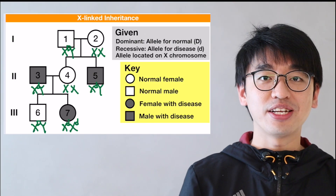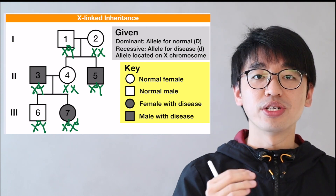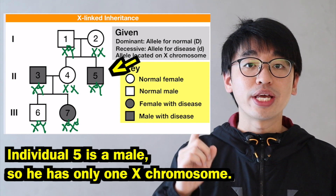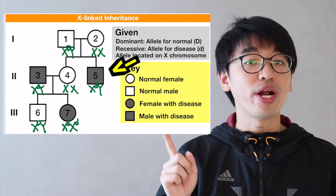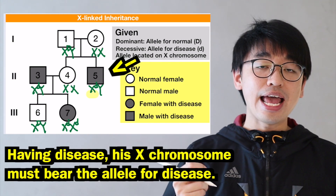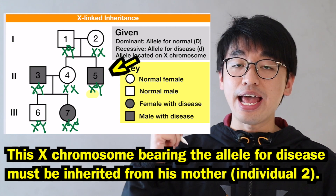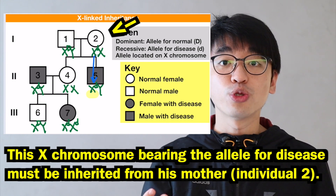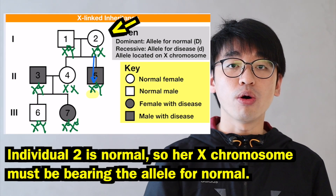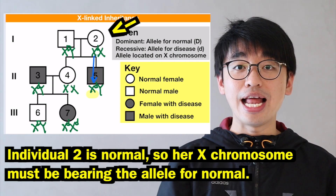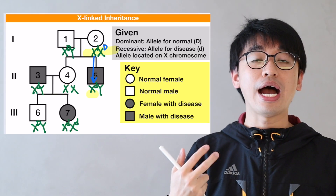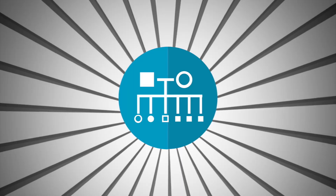To find the genotype of individual 2, we do not start with her directly — we start from her offspring. Using individual 5: he is male, so he has only one X chromosome; he has disease, so his X chromosome bears the allele for disease. This X chromosome must have been inherited from his mother, individual 2. Since individual 2 is normal, she must have at least one X chromosome bearing the allele for normal. Therefore, individual 2 must be heterozygous.